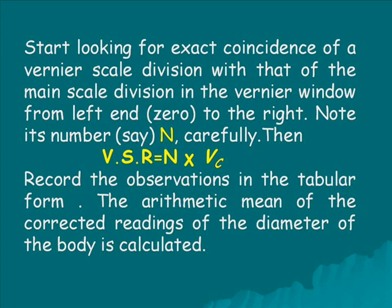Vernier scale reading is equal to N into VC, where VC is nothing but Vernier constant, nothing but least count.